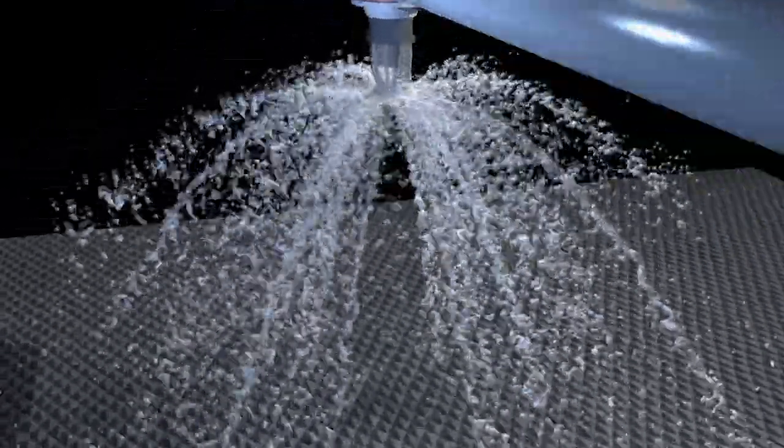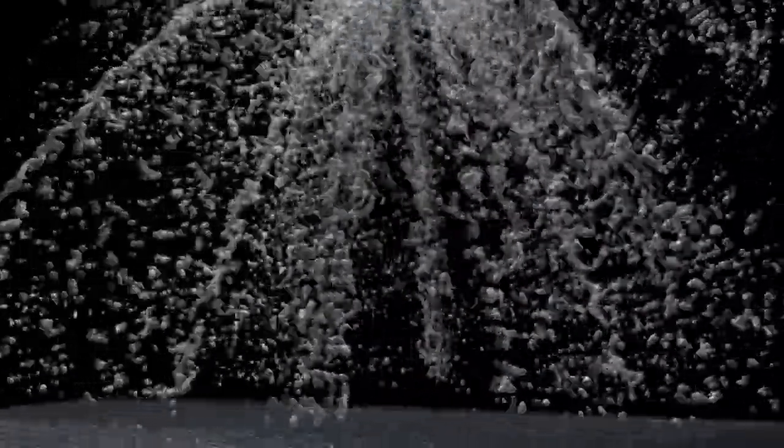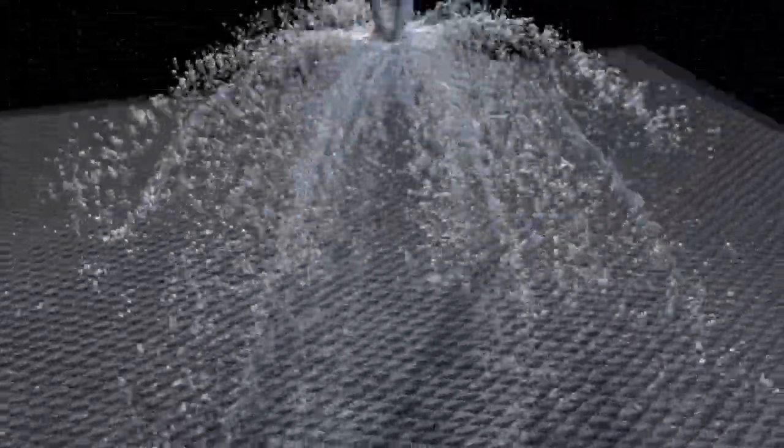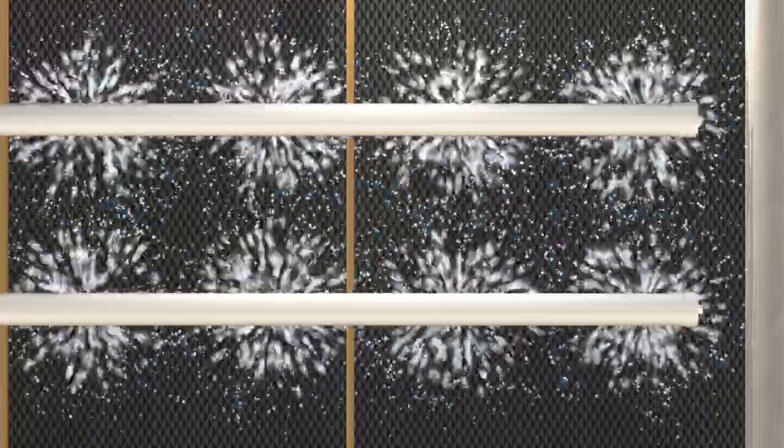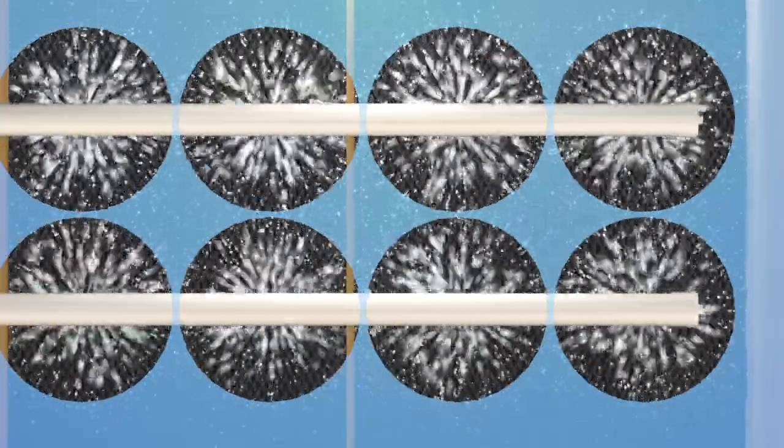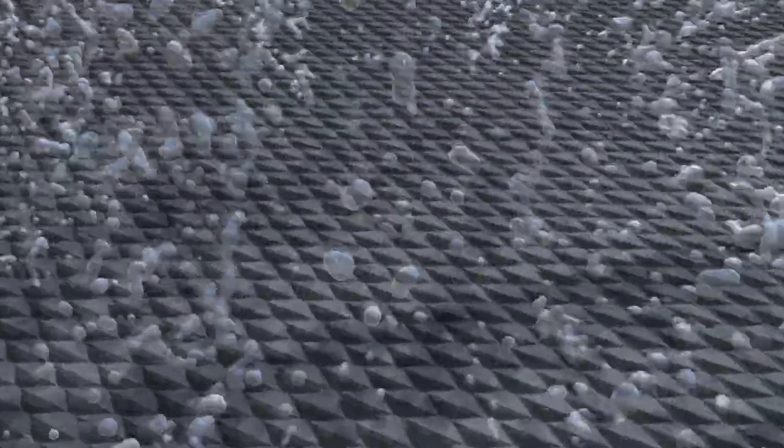Most cooling tower nozzles produce a round umbrella water pattern, which creates voids and uneven water flow. Circles cannot cover a square area evenly. 22% of the area is void of water.